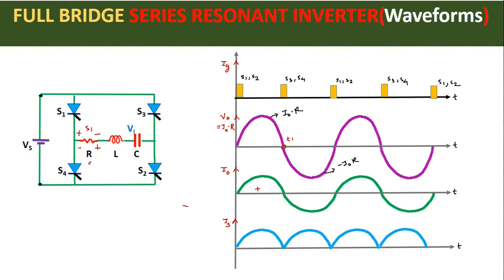We get negative voltage when S3 and S4 SCRs are fired. Since the source current direction does not change whether S1 and S2 or S3 and S4 are fired, for the source current we always get a positive current pulse. After S3 and S4, we again fire S1 and S2, and in this way the cycle repeats. After the load current goes to zero, we fire the next pair of SCRs. Therefore we obtain the maximum output frequency equal to the ringing frequency of the resonant circuit.